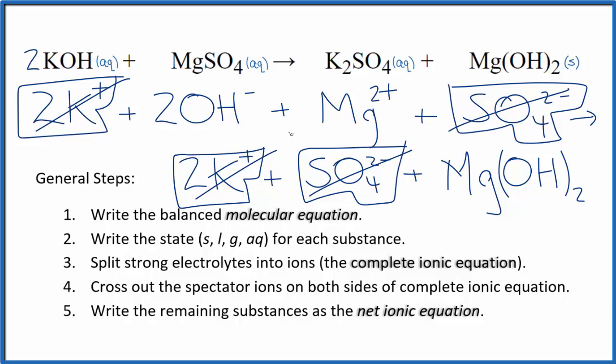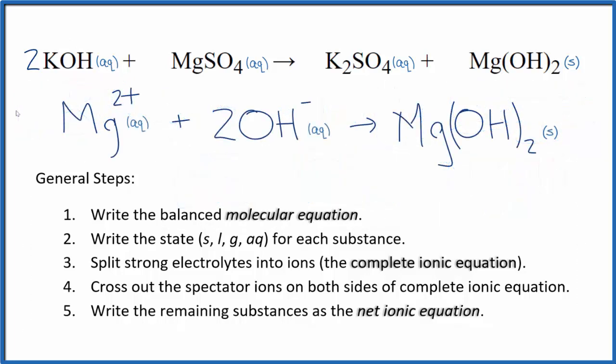I'll clean this up and write the states. We'll have our net ionic equation. So this is the balanced net ionic equation for KOH plus MgSO4. We have charge balanced.